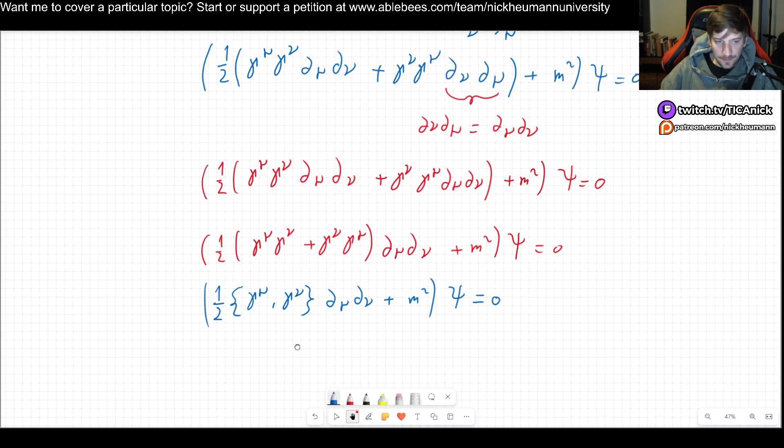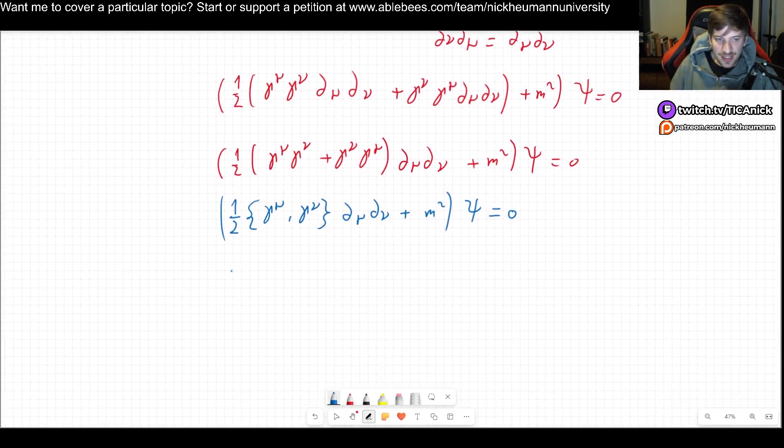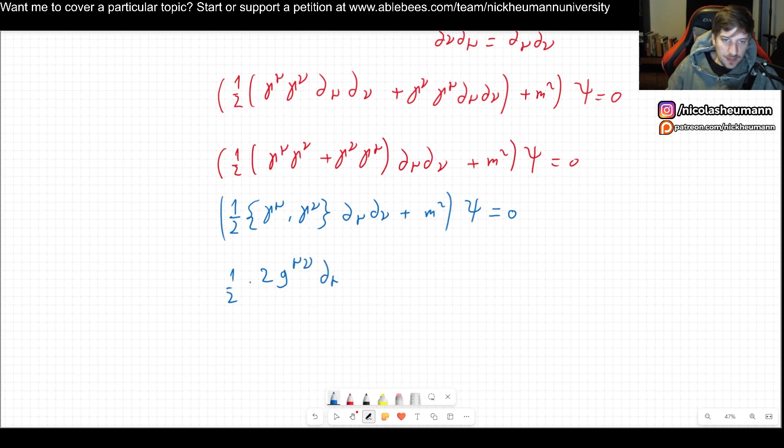So now we can use the fact that this thing right here, so we have one half, this is two times the metric mu nu in a four by four space that is implied, right? Times d mu d nu plus m squared and all of this acting on psi.